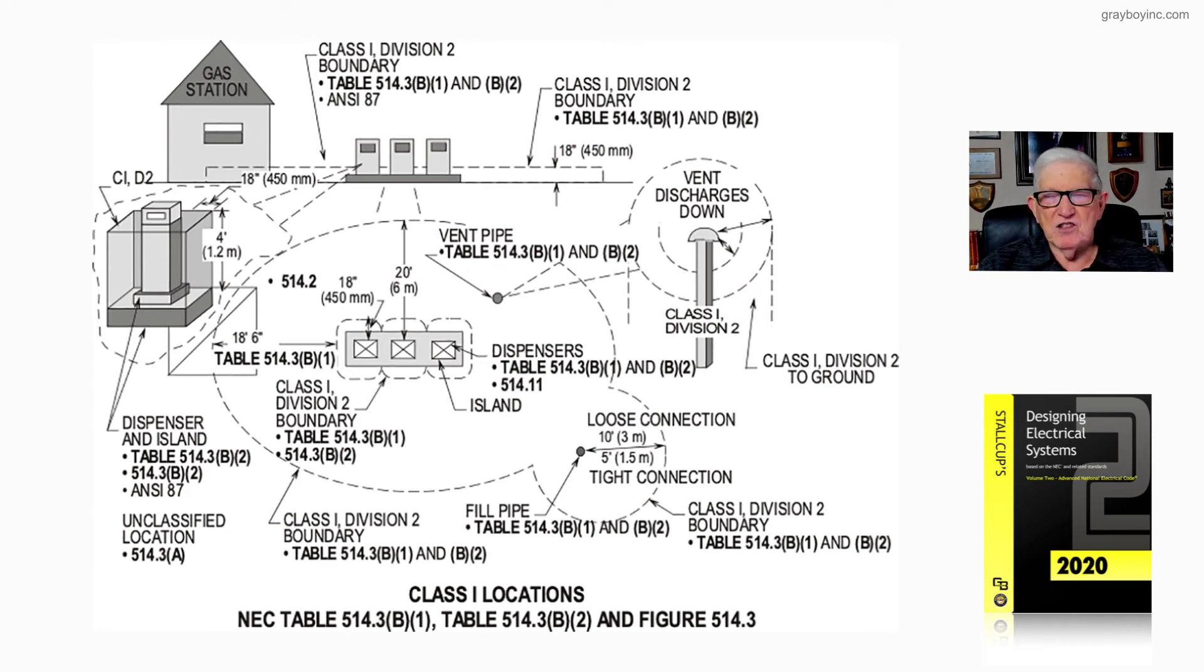But now, if it's a tight connection, where it has the holes, when they put the filling equipment in, it will telescope. And it will make a tight connection, and it's only 5 feet, as you see there. So we're inspecting or wiring loose connection or tight connection there. And you see how those boundaries will extend out.